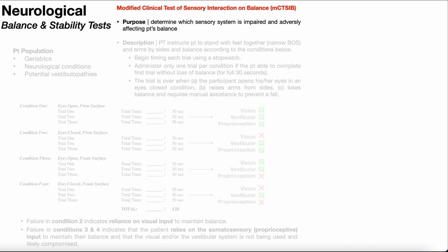In this video, we're going to be discussing the modified clinical test of sensory interaction on balance, which for obvious reasons is shortened to modified CATSIB. We're going to be discussing how you perform the test with demonstrations and also how you interpret the results. The purpose of the modified CATSIB is to determine which sensory system is impaired and adversely affecting a patient's balance.